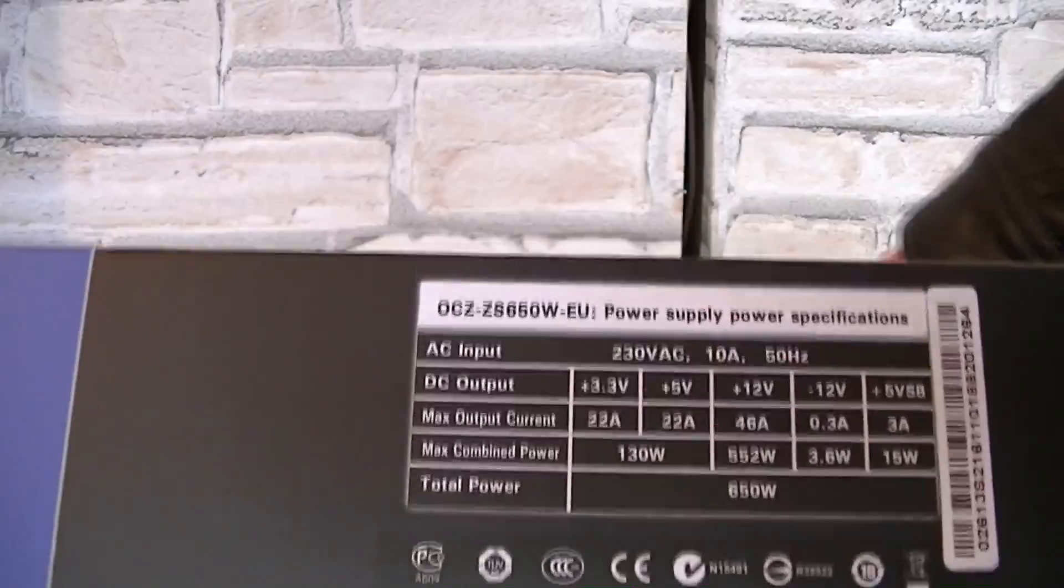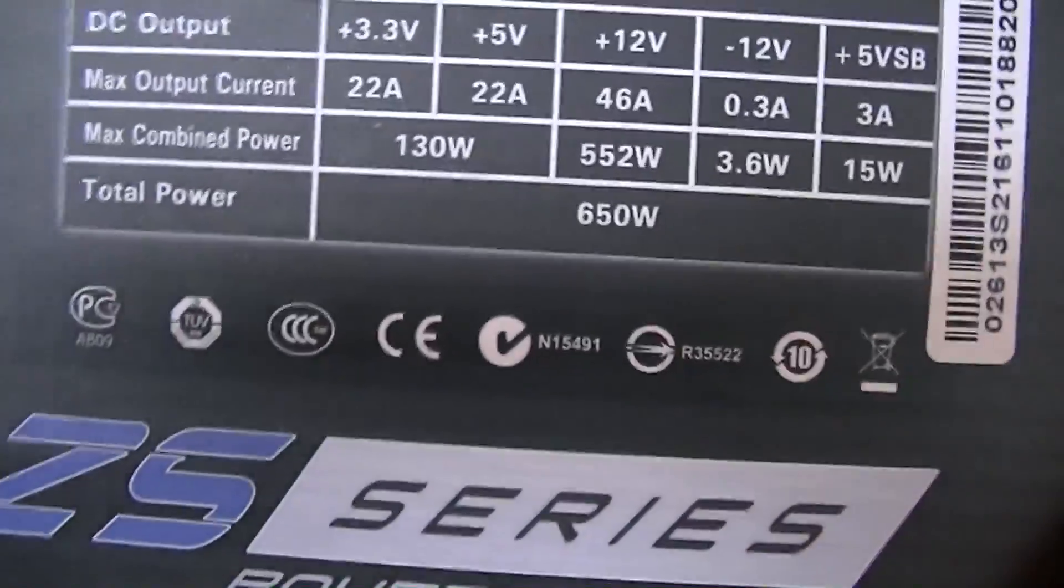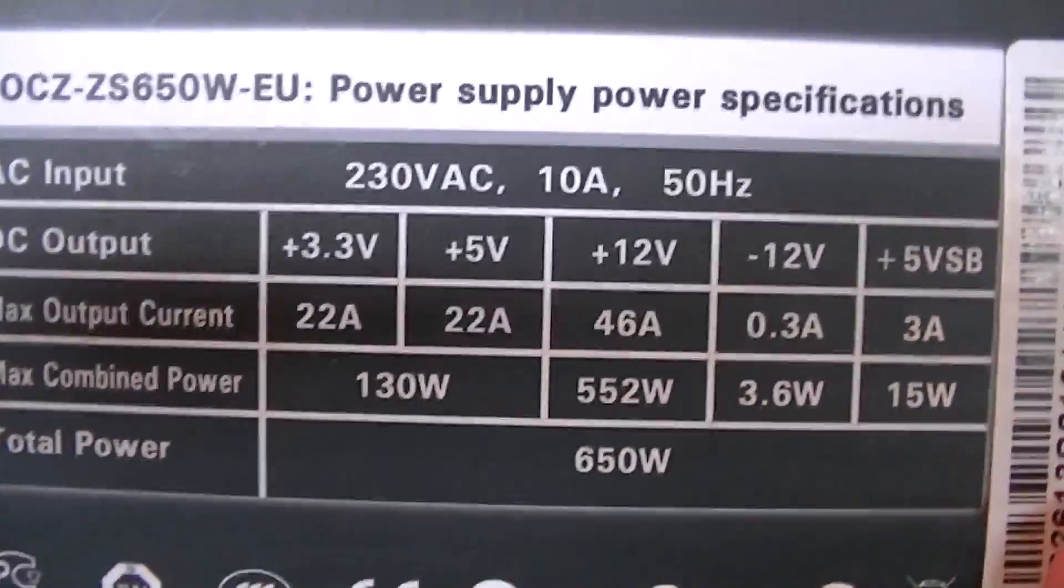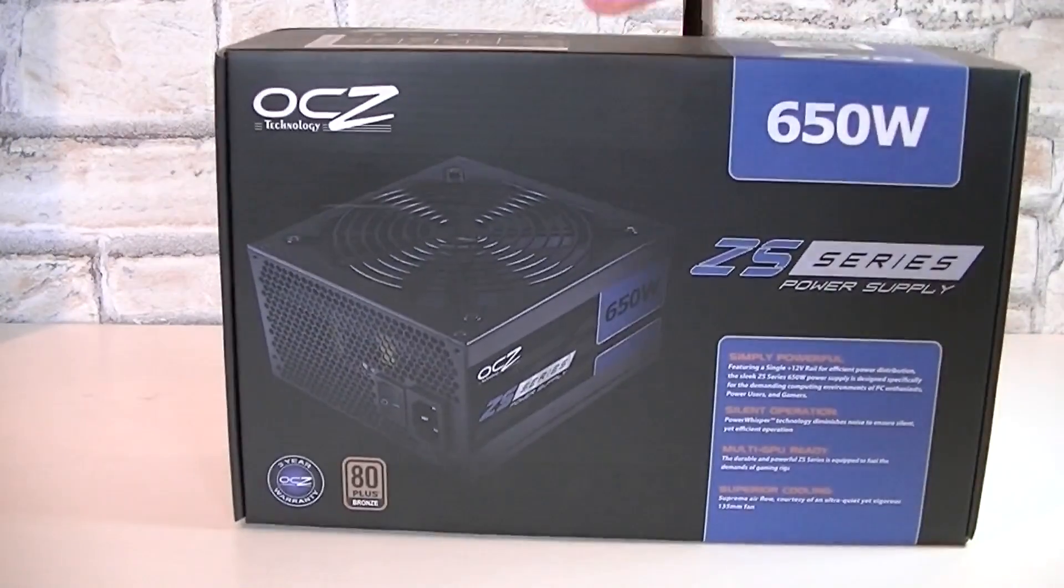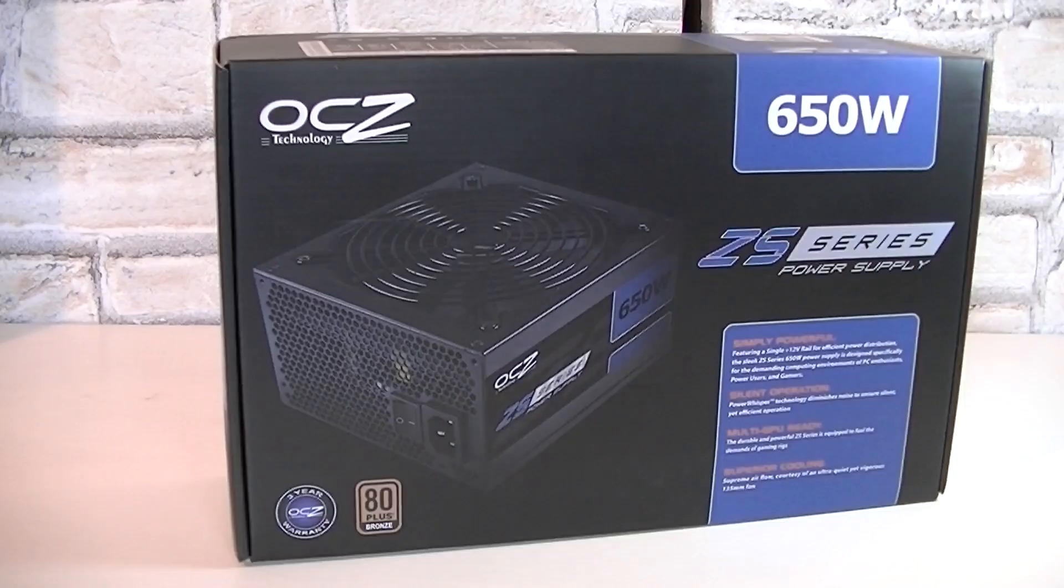On this side you get the most important specifications of all. You get 552 watts on a plus 12 volt rail. That's fairly good and the amps are high too. The box looks very professional by the way. At first I didn't think I was looking at a power supply at this price range.